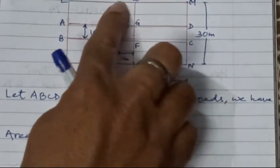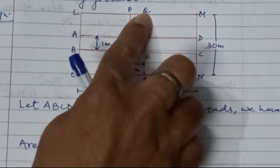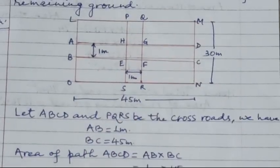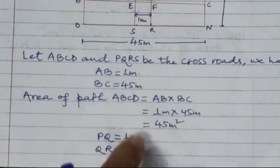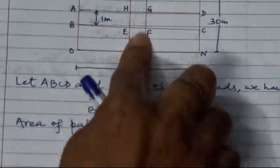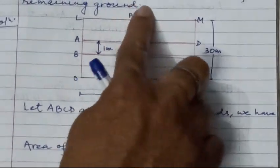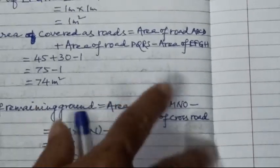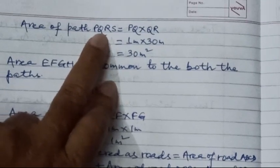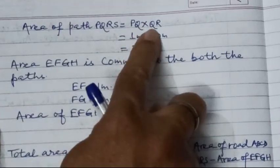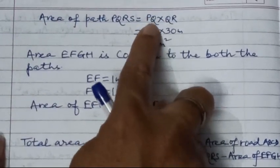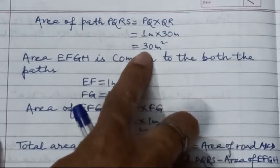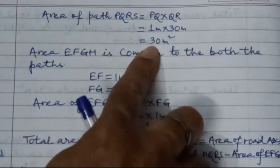Again, PQ — the width of road PQRS — is 1 meter, and QR is equal to 30 meters. The area of path PQRS equals PQ into QR, which is 1 meter into 30 meters. After multiplication we get 30 meter square.